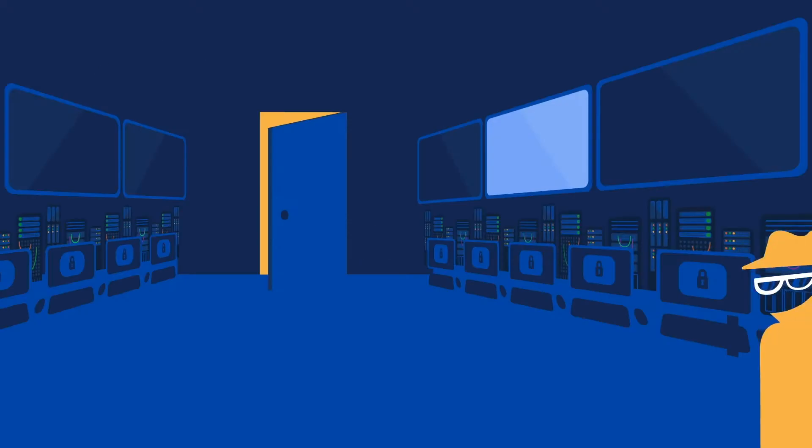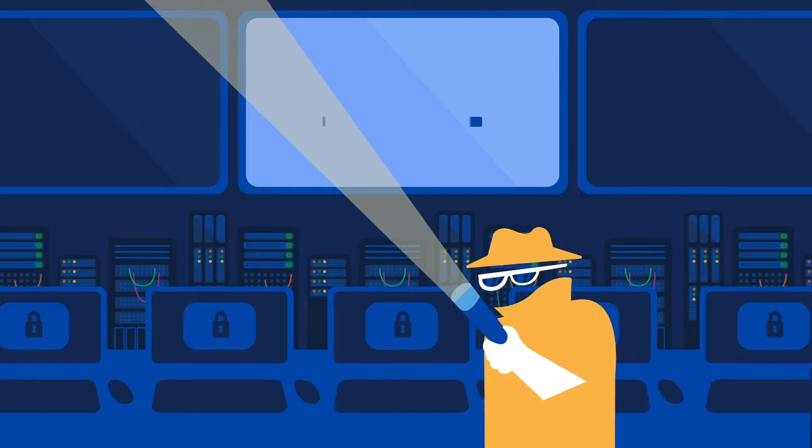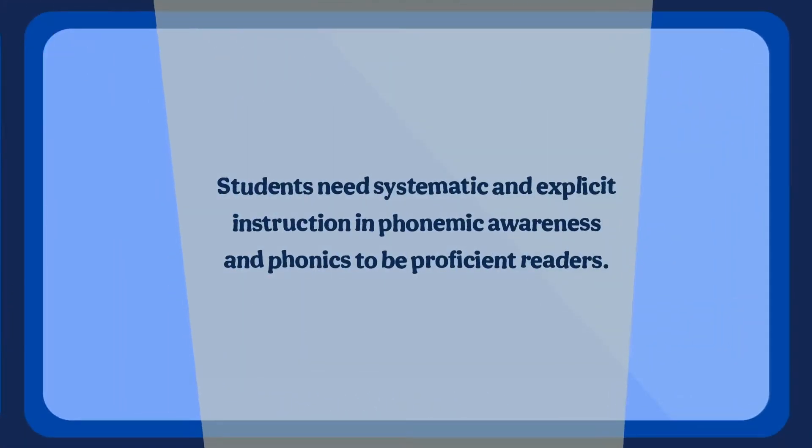Unlike walking or talking, learning to read is not something the human brain naturally learns to do. The majority of students need systematic and explicit instruction in phonemic awareness and phonics to be proficient readers.